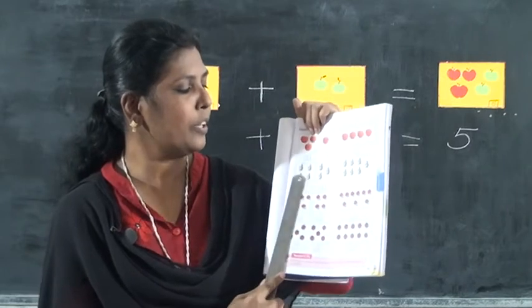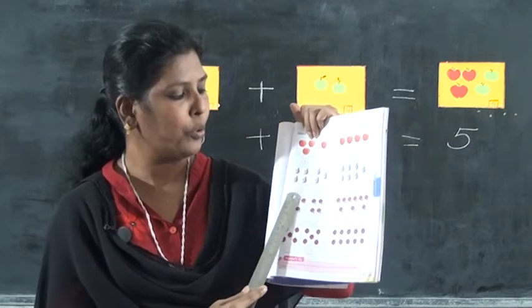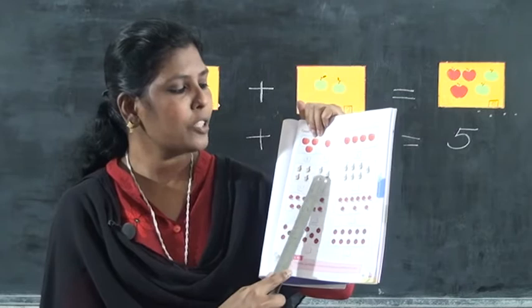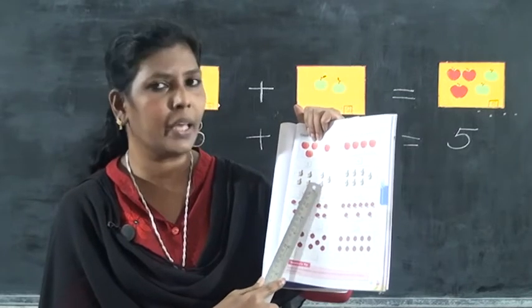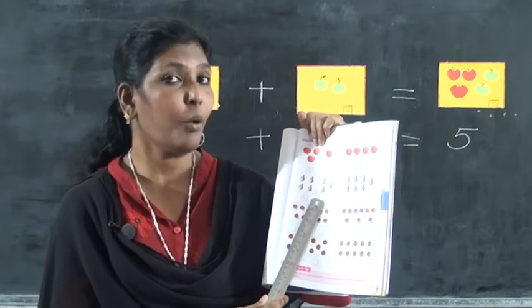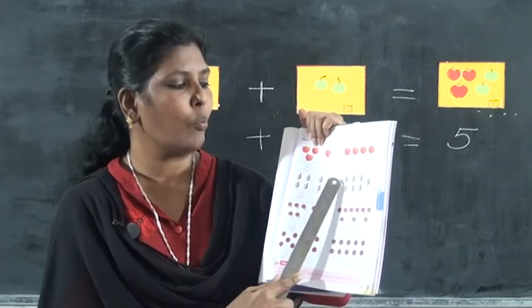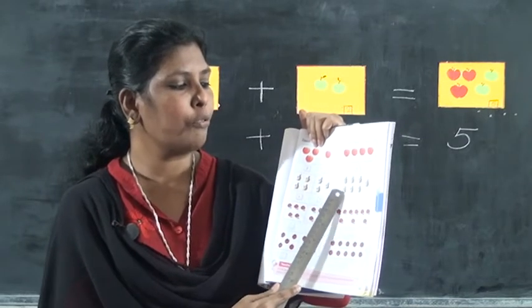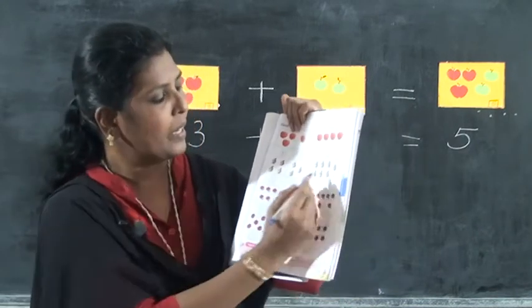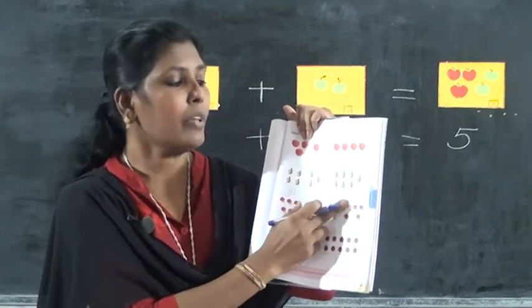Then next row. How many squirrels are here in the first box? One, two, three, four. The number is given. Then the next box: one, two, three. Three squirrels. Four plus three. How many? Count all together. One, two, three, four, five, six, seven. Right here, number seven. Four plus three is equal to seven.